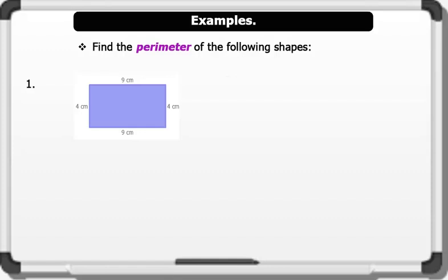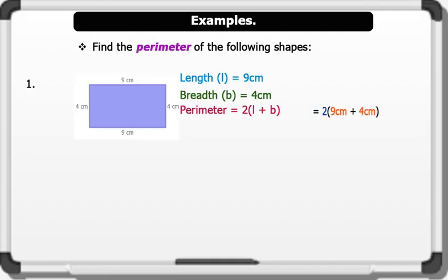Solution. Length equals 9cm, breadth equals 4cm. Perimeter equals two bracket l plus b. Replacing the length and breadth we have two bracket 9cm plus 4cm. This gives us 2 times 13. Therefore, the perimeter of the rectangle equals 26cm.